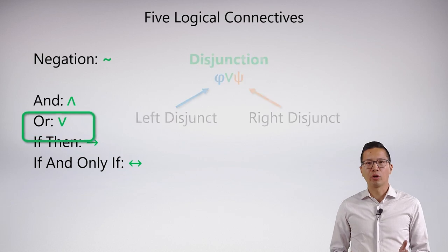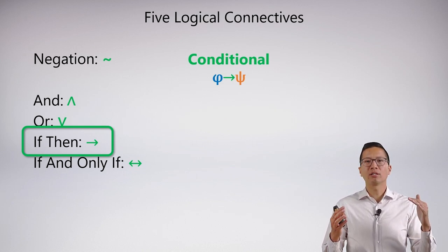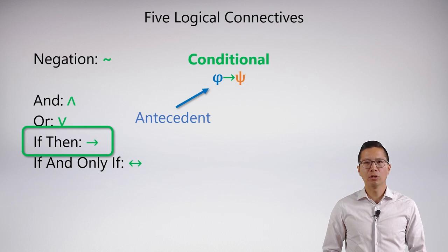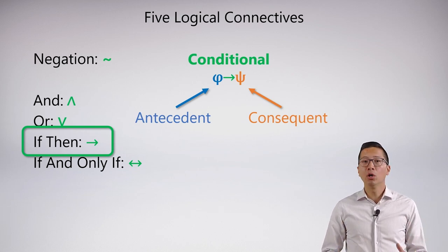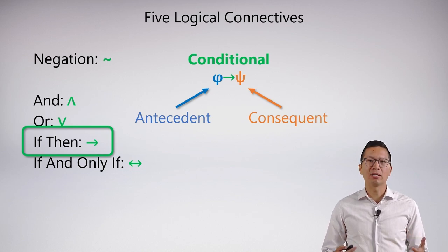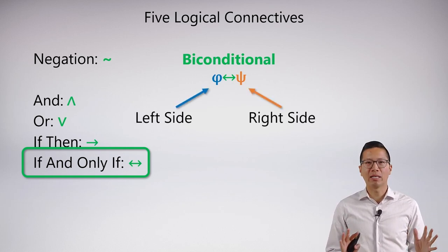The if-then is a trickier one — it's called a conditional. A conditional statement is important because unlike the conjunction or the disjunction, the sides are really important: there's a front and a back. For the front, we call that the antecedent of a conditional, and for the back we call that the consequent. These labels are extremely important — we're going to be talking about antecedents and consequents a lot in this unit because symbolizing the conditional is the most difficult thing to master. What about if and only if? We call this the biconditional. The biconditional has arrows both ways, so we just have a left side and a right side — we don't really have fancy names for that.